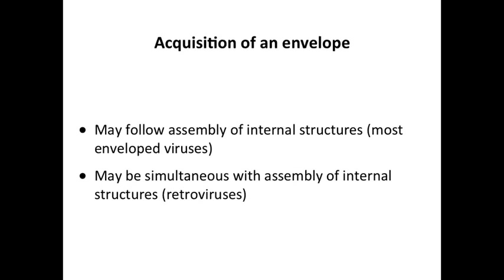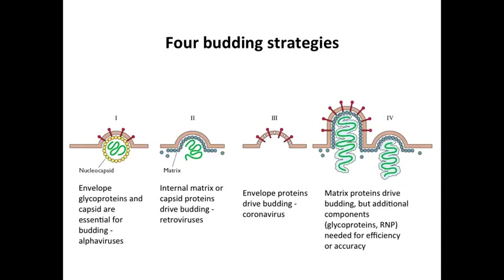Finally, let's talk about how you get an envelope. As I said, this can follow the assembly of internal structures — influenza is the example we talked about, and that's how it happens for most viruses — or it can happen simultaneously with assembly of internal structures, like retroviruses.